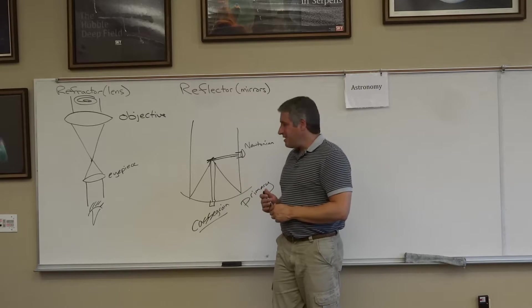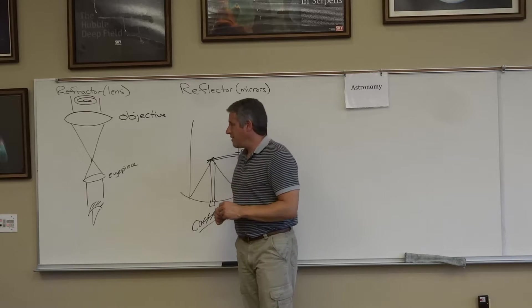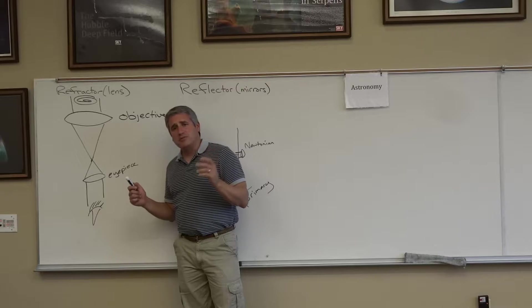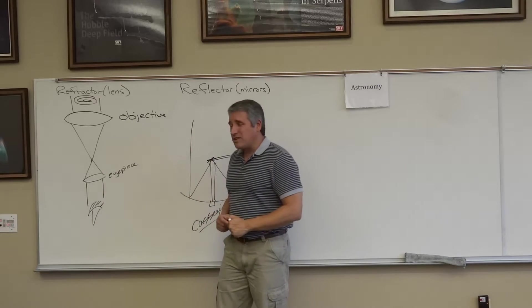And quite honestly, we build mostly Cassegrain reflectors. Why? Well, it turns out there's a problem with building big refractors. In fact, the last big refractor was built in the late 1800s. Because as the lenses got bigger and bigger, we started to have a problem.